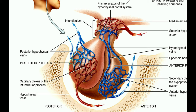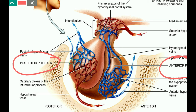The pituitary gland consists of two main lobes: the anterior pituitary and the posterior pituitary. The posterior pituitary is linked to the hypothalamus by a stalk-like structure called the infundibulum. The anterior pituitary is also called the adenohypophysis since it is the glandular portion, whereas the posterior pituitary is called the neurohypophysis because it receives neurons from the hypothalamus.